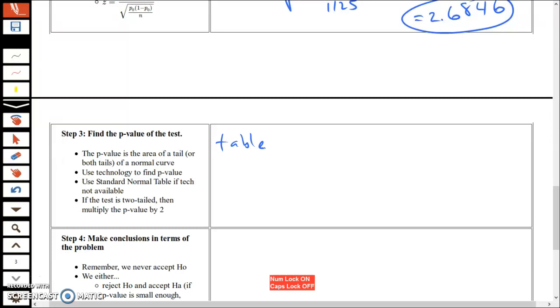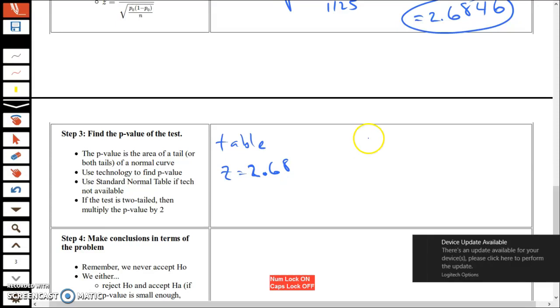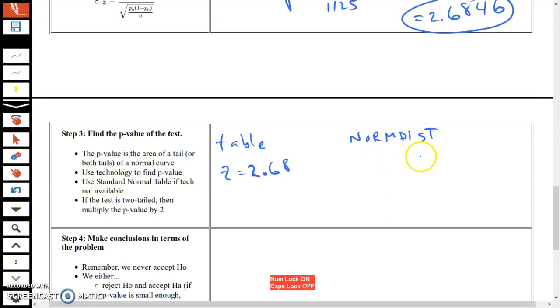One is to go to the table, the standard normal curve table. You have to round it off to 2.68 to use the table. Or you can use on a spreadsheet the norm dist command, or on a TI calculator the normal cdf command, and so on. However you get your answer is totally fine. I'll just use a table here. I've got a book, I'm just going to look it up off video real quick.